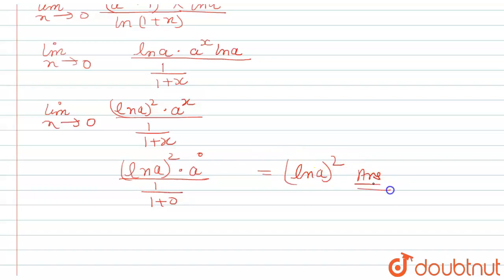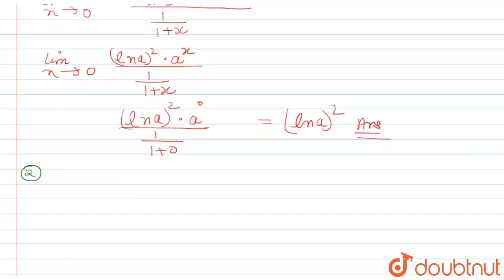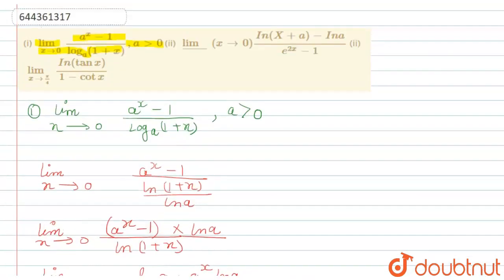So the answer to part one is (ln a)². Now let's move to question number two, which says: limit x tends to zero, ln(x plus a) minus ln a, upon e raised to the power x minus one.